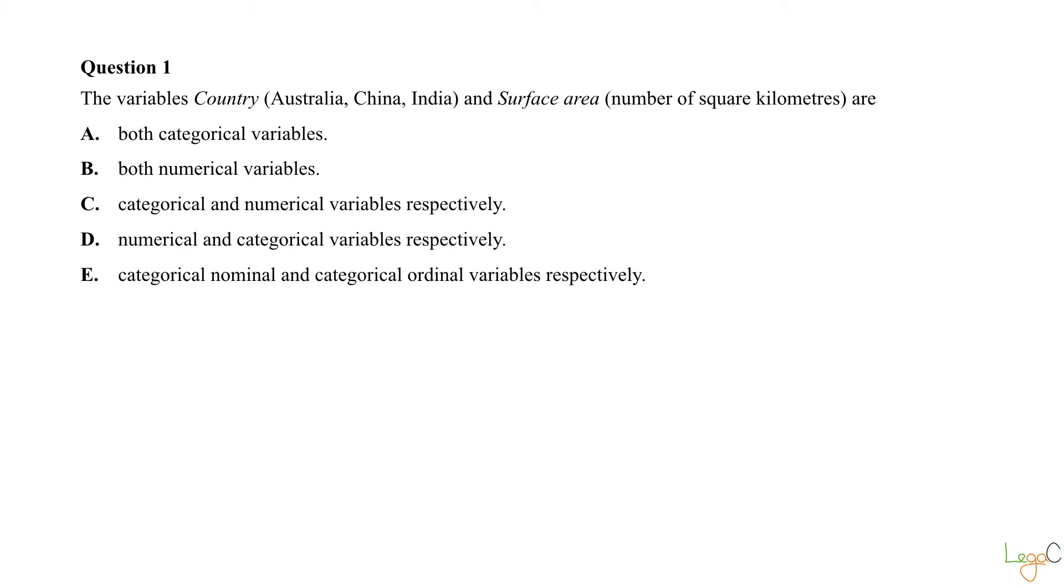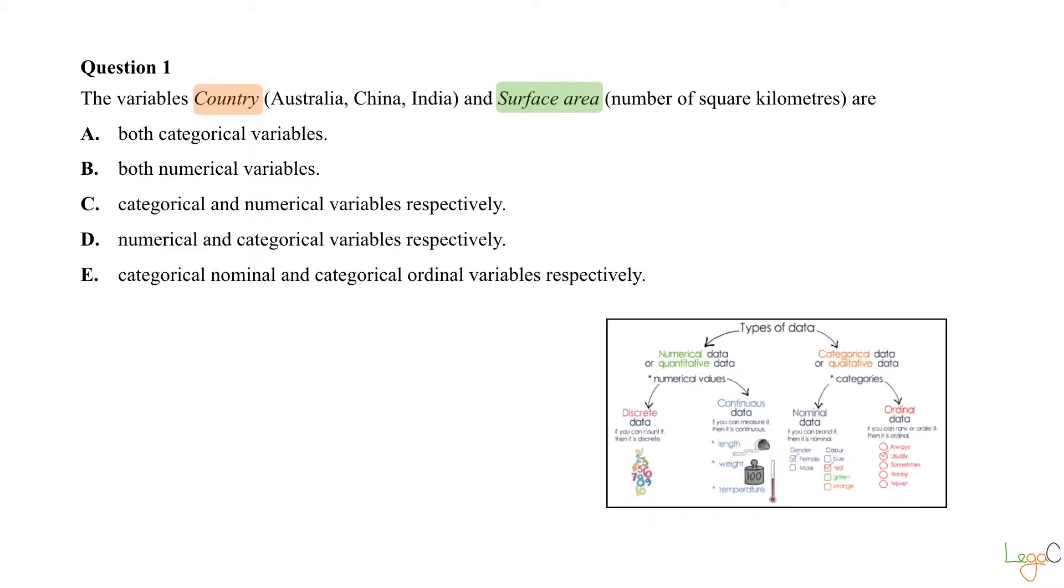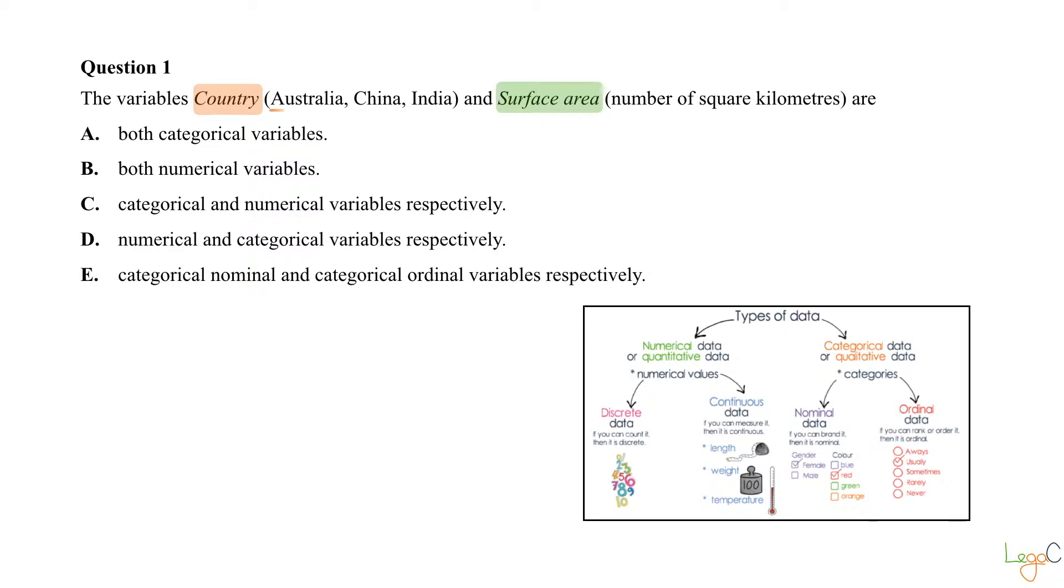In this question, we are given two variables, country and surface area, and we are asked to state what type of variables they are. Let's start with country: Australia, China, India. This is definitely a categorical nominal data because we don't have to put them in any order, so they are sort of like branding. For this reason, we can cross out options B and D. Option D is because of the word respectively, which means that the first variable should be categorical.